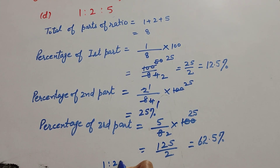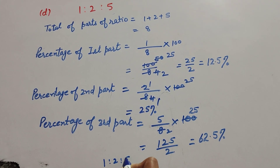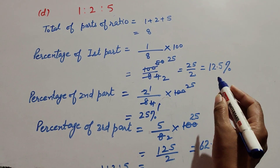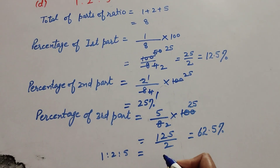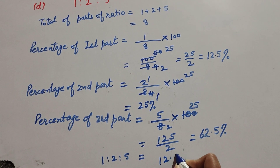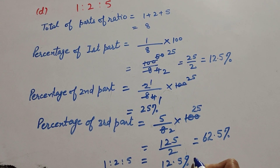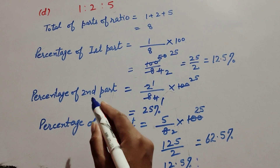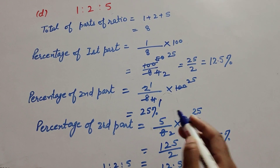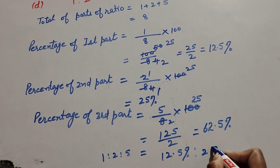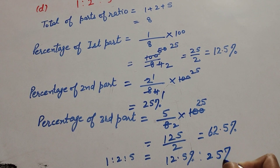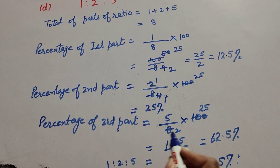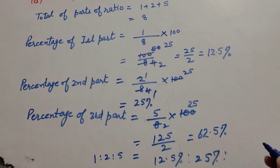So the given ratio is 1:2:5. When we change this ratio into percentage: the first part — one — is twelve point five percent; the second part — two — is equal to twenty five percent; and the third part — five — is equal to sixty two point five percent.